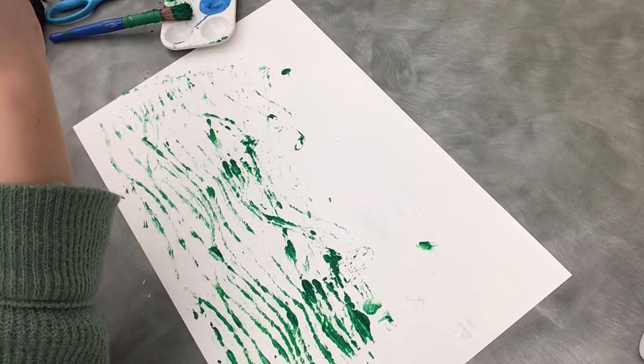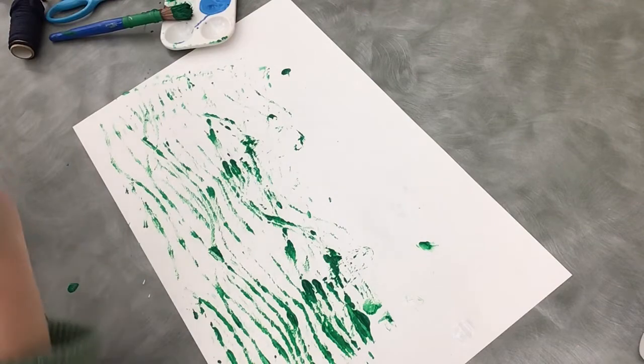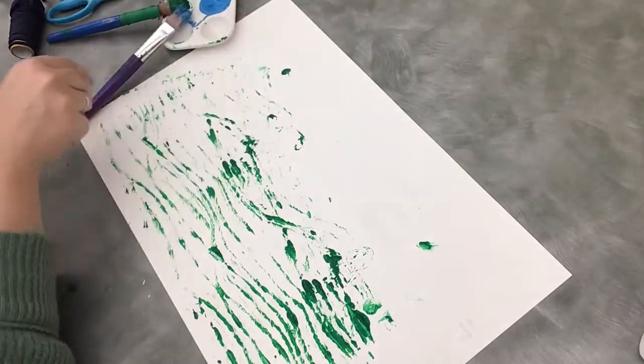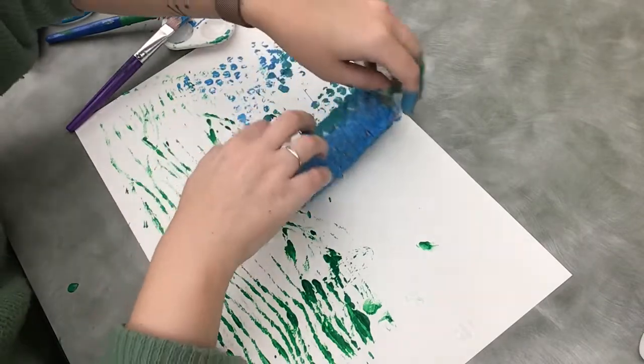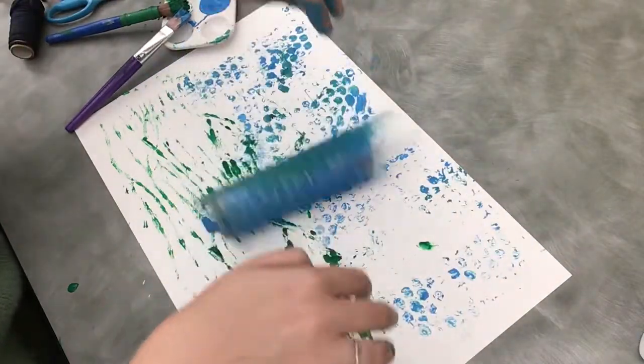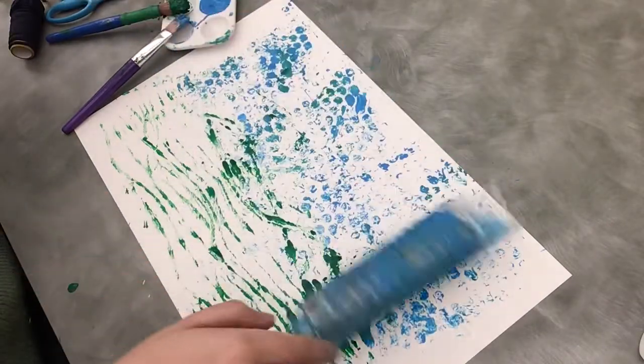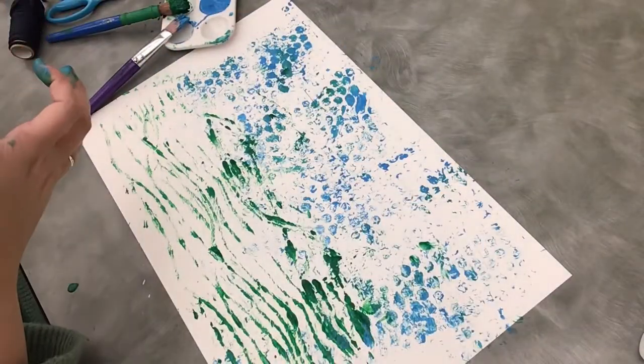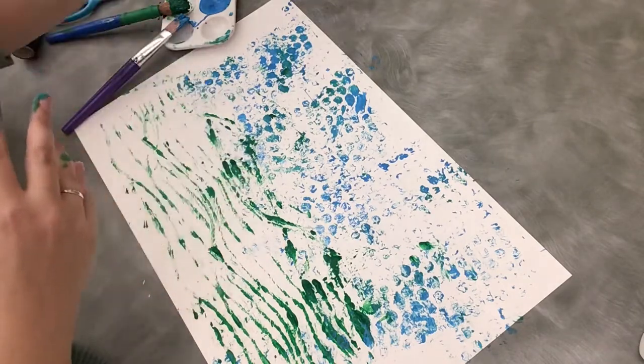I think this one's gonna look really cool. So are you ready? We've got it all painted. We are gonna roll it across. Just like the other guy. It almost looks like cheetah spots, I think. So there's that one. So far, so good with our stamp friends. And my hands are really messy.